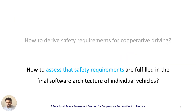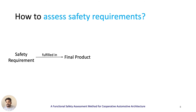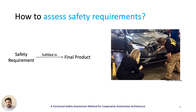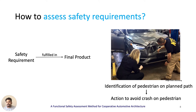Moving on to the second challenge — how to assess whether the requirements are fulfilled in the software architecture of participating vehicles. Requirements are of no value if not used or cannot be used in the assessment of the resulting system. An epitome of this is the unfortunate accident of the Uber self-driving vehicle which led to the death of a pedestrian. The investigation by the National Highway Safety Authority from the United States revealed that the vehicle recognized the pedestrian but decided not to act, despite enough safety margins for braking or evasive maneuvers. The host vehicle from Volvo had also been equipped with safety features, but these were overridden by the Uber software. Here, the safety requirement that identification of a pedestrian in a planned path shall lead to actions avoiding a crash was not fulfilled by the software.